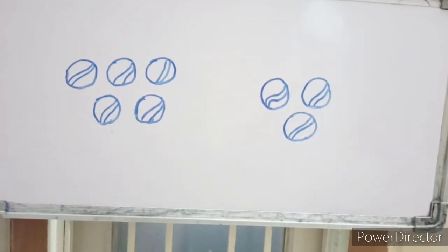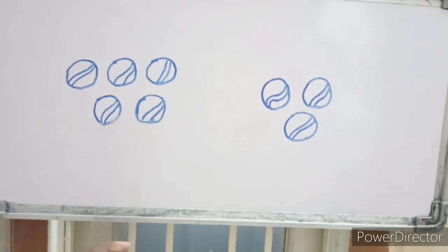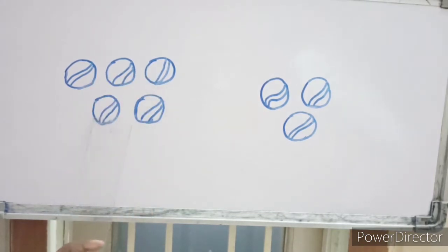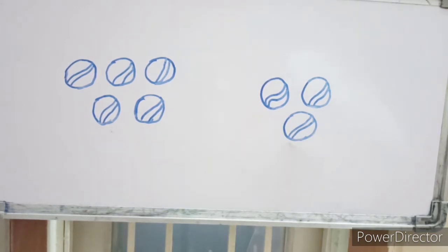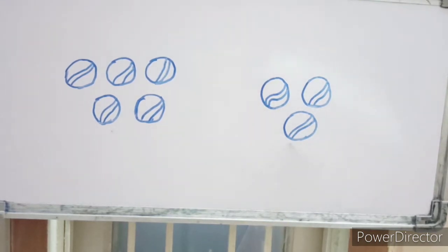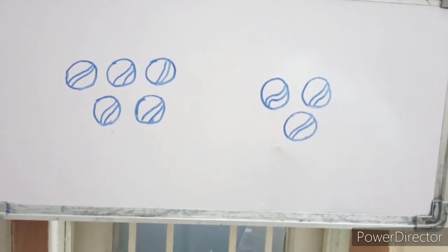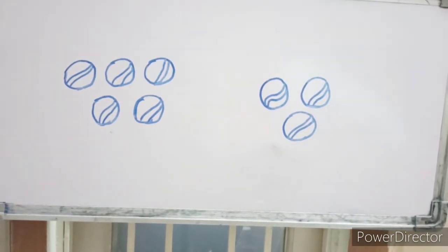Here, what do you see? Balls! How many balls are there? Count — one, two, three, four, five. Five balls here. Now here, how many balls are there? One, two, three — three balls. So here five balls, here three balls. You can tell that many balls are here and fewer balls are there.